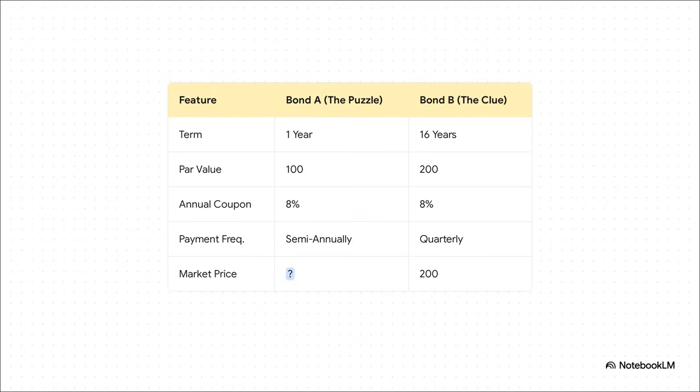Here are our two main players side by side. You'll notice they both have an 8% annual coupon, but a lot of the other details are different. Bond A is short term, paying twice a year. Bond B is much longer term, paying four times a year.